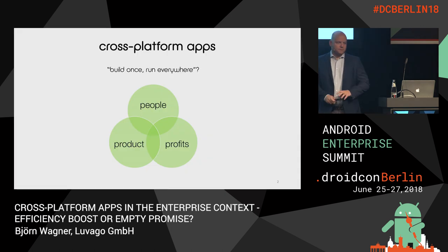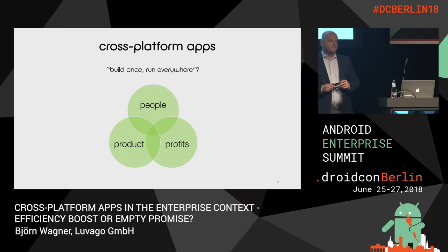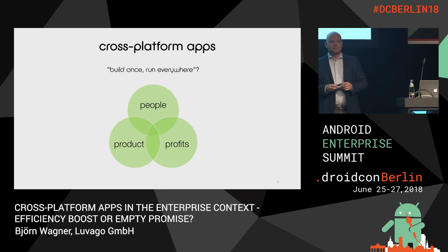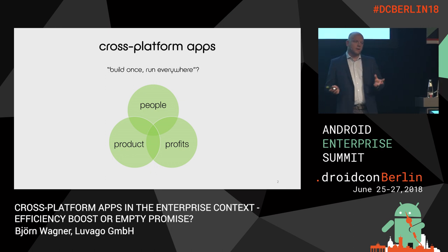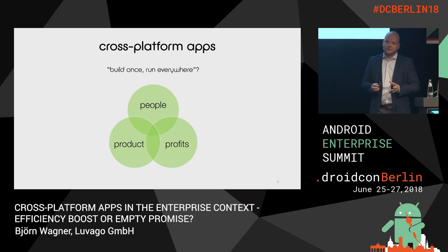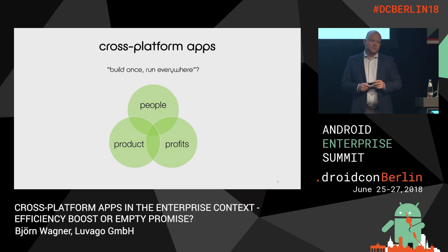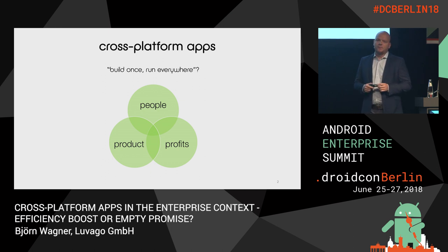Since this is the enterprise track, I don't want to focus so much on the tech aspect of things — I really want to take a different perspective here. I want to first highlight how you set up teams, what is important when transforming existing teams or hiring new people for cross-platform development. Then I will take a look at the product side, which involves the tech side a little bit. And in the end, I want to give a little bit of outlook on the economic side, just to give you an idea.